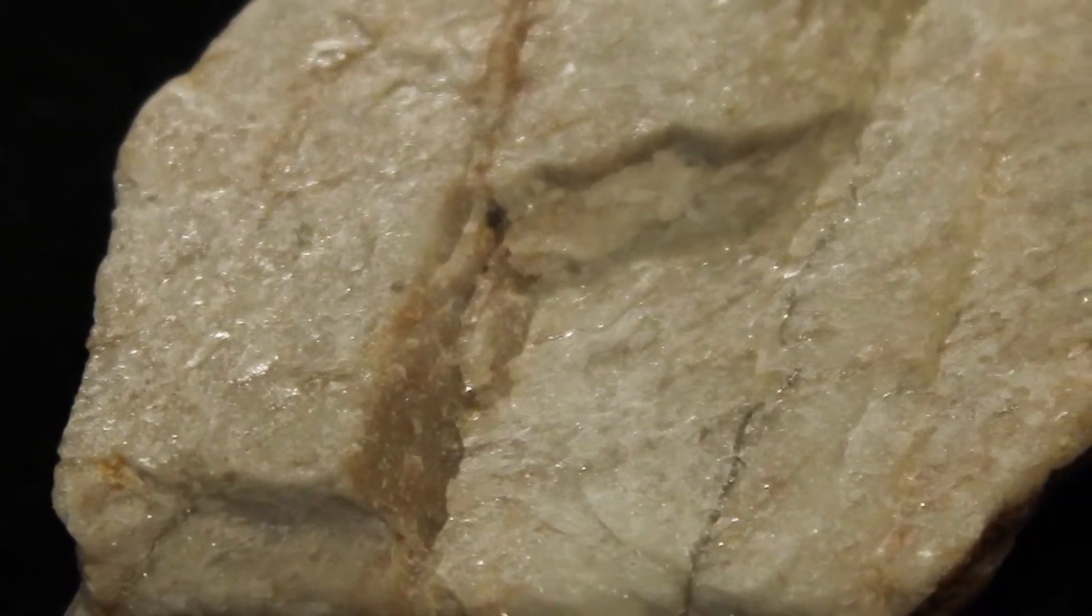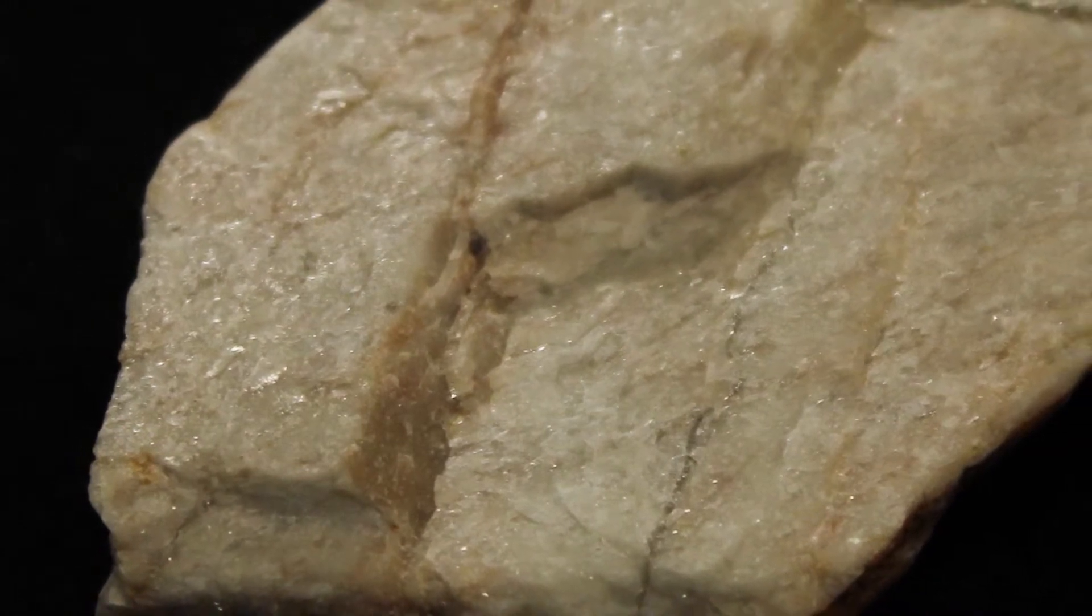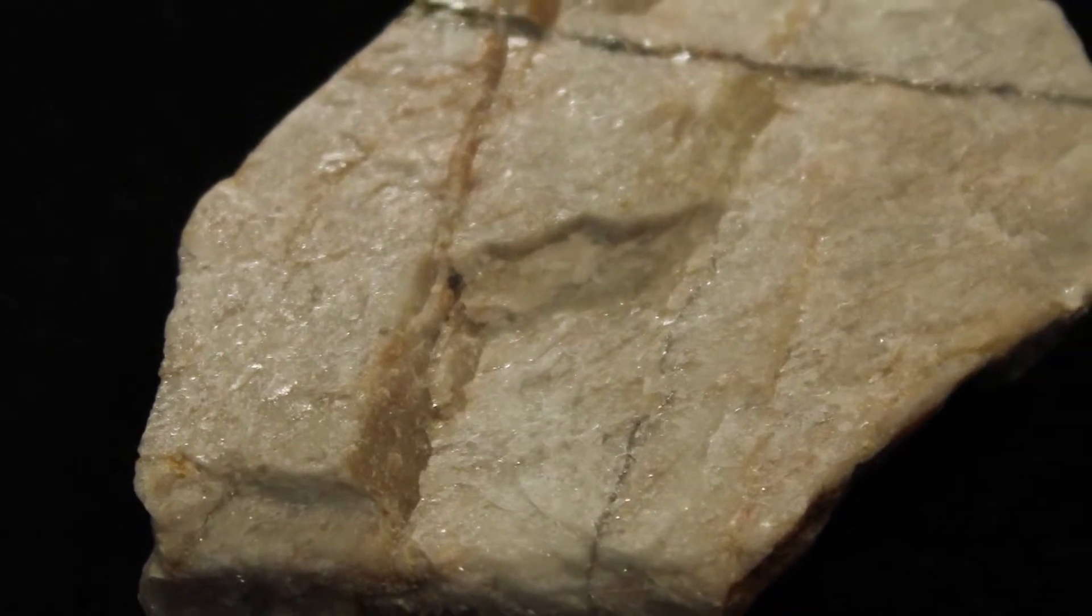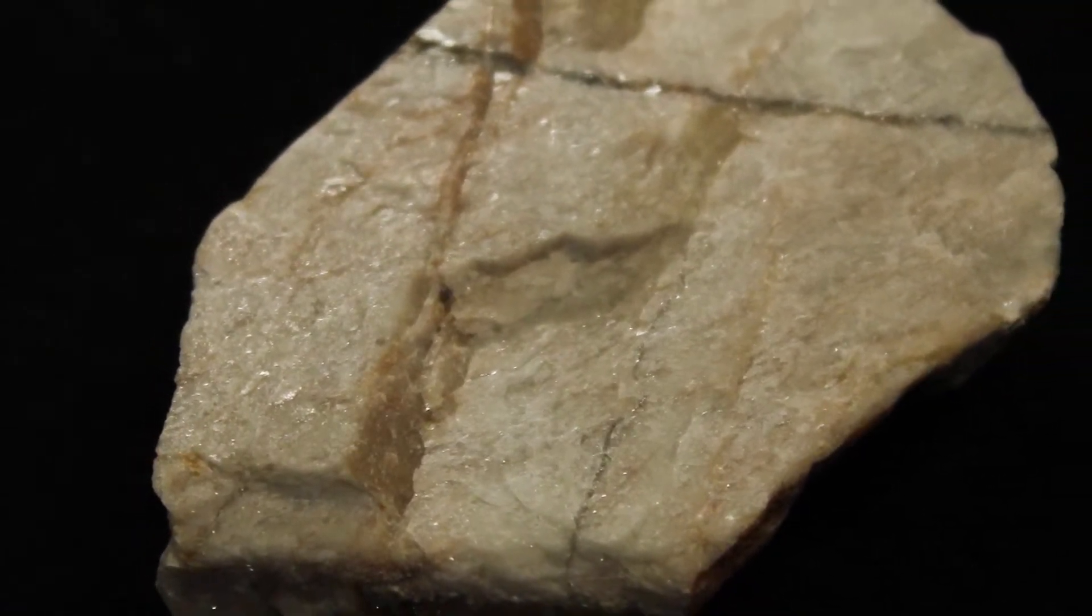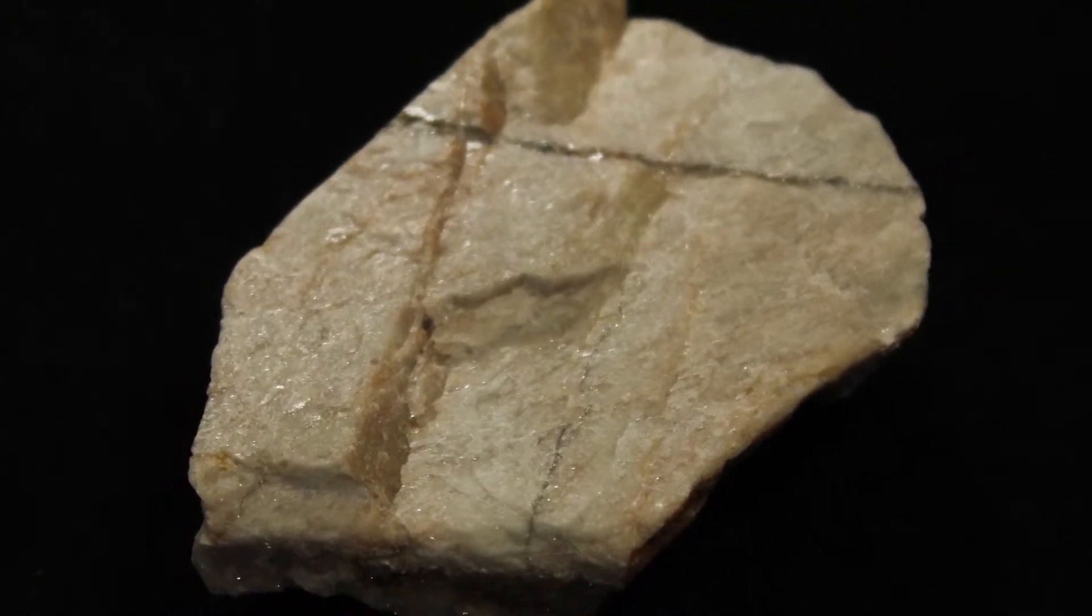When we examine a typical sample of feldspar, we can always find at least some good flat surfaces, so we say that feldspar displays cleavage. Also, if we look closely at those locations where the cleavage surfaces intersect, we notice that those intersections form a 90-degree angle.